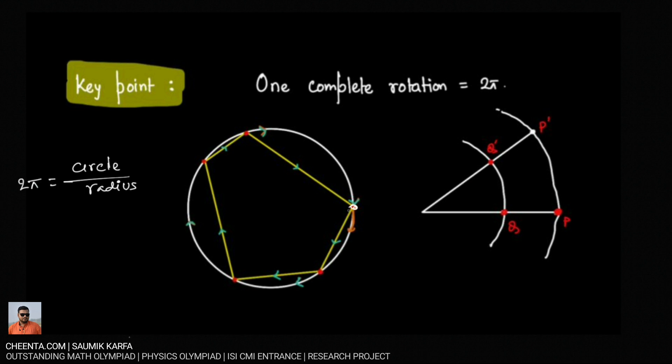So this is taking one complete rotation which is equal to 2π. We know circumference of the circle is 2πr over radius r so that would be 2π.